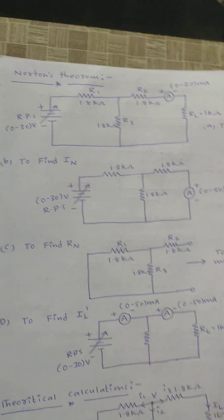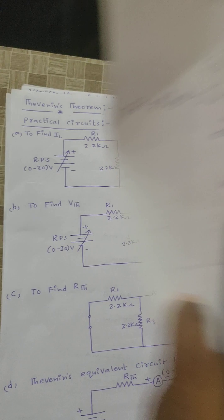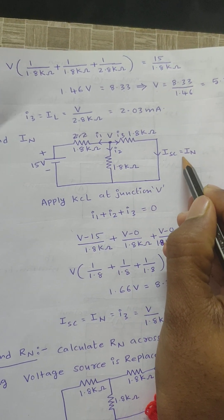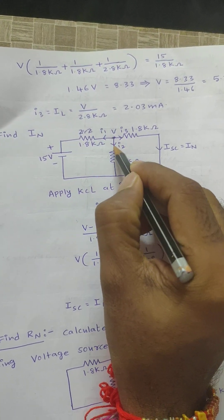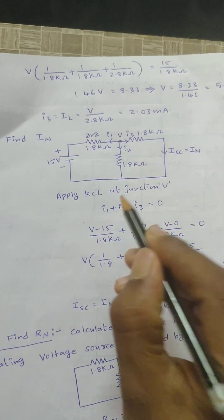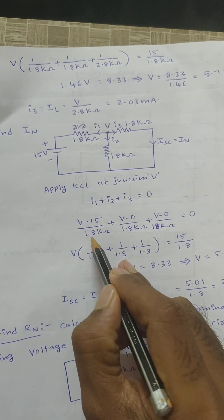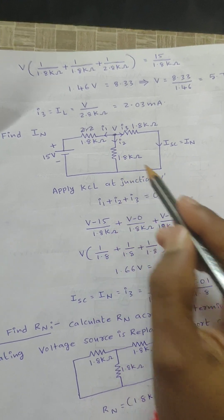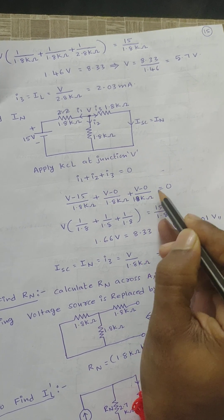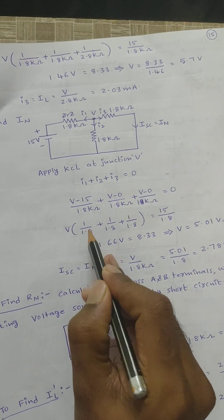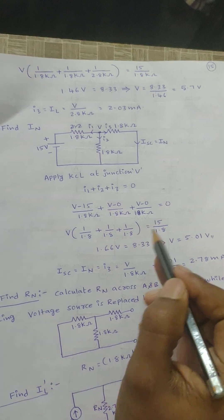Next, using Norton's theorem: first, remove the load resistance RL. Short those two terminals and calculate the short-circuit current — that is Norton's current. Applying KCL at the junction again: I1 + I2 + I3 = 0. I1 = (V − 15) / 1.8 kΩ, I2 = V / 1.8 kΩ, I3 = V / 1.8 kΩ. Taking V as common: 1/1.8 + 1/1.8 + 1/1.8 = 15 / 1.8 kΩ.